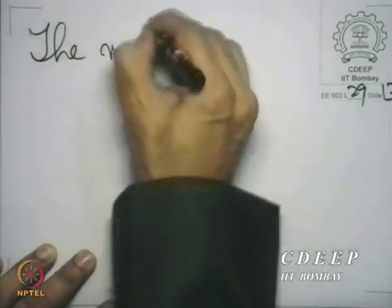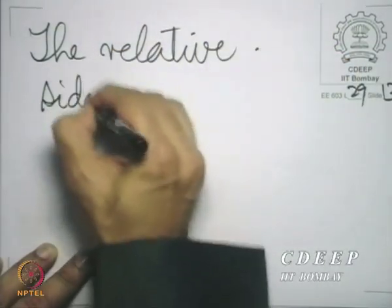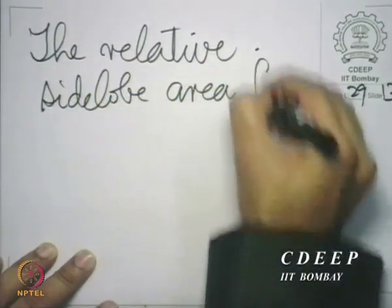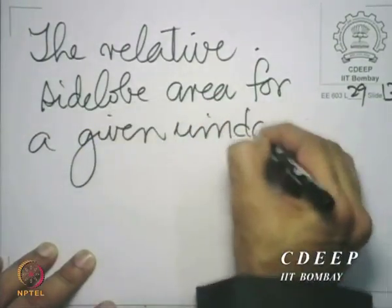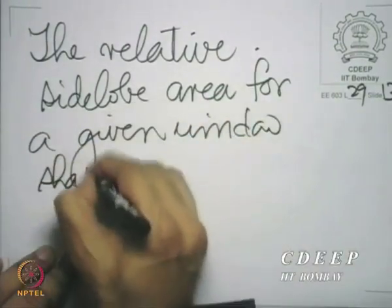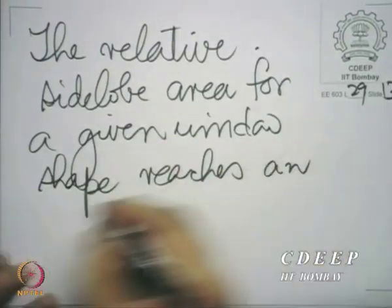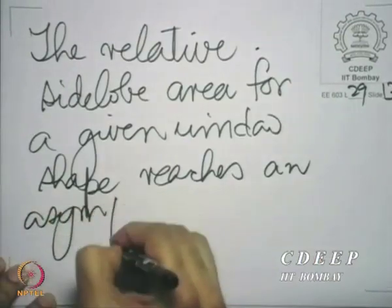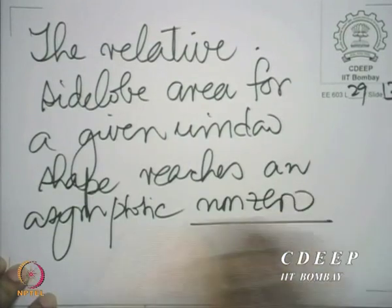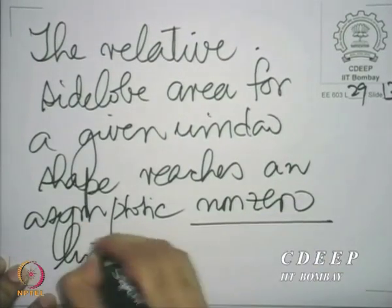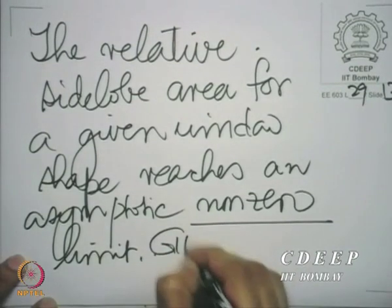The relative side lobe area for a given window shape reaches an asymptotic non-zero limit, and this is the origin of what is called the Gibbs phenomenon.